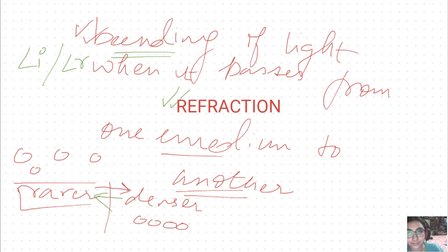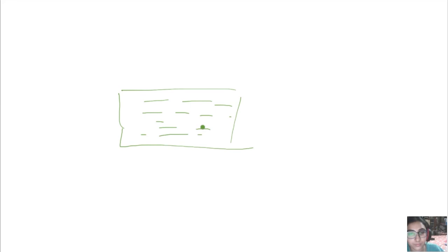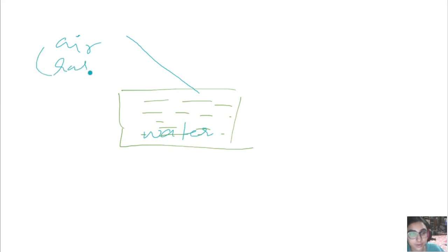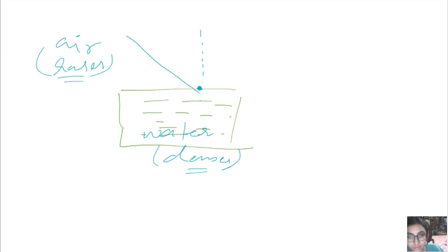For example, if there is water here and a ray of light is coming through air — so air is the rarer medium and water is the denser medium. We draw a normal, and remember that the incident point and the point at which the normal is drawn should be the same.